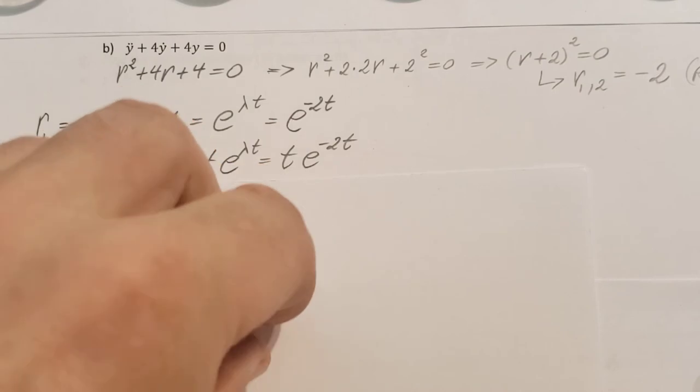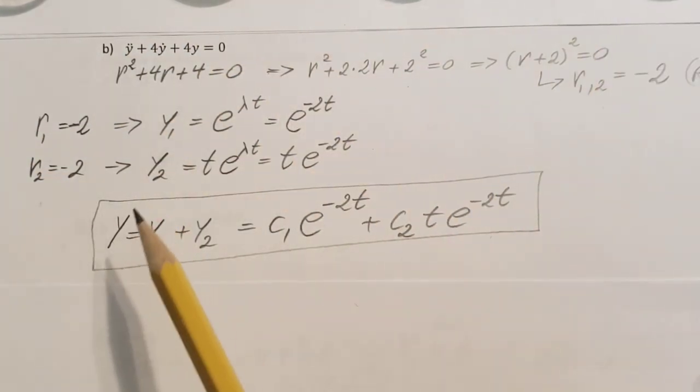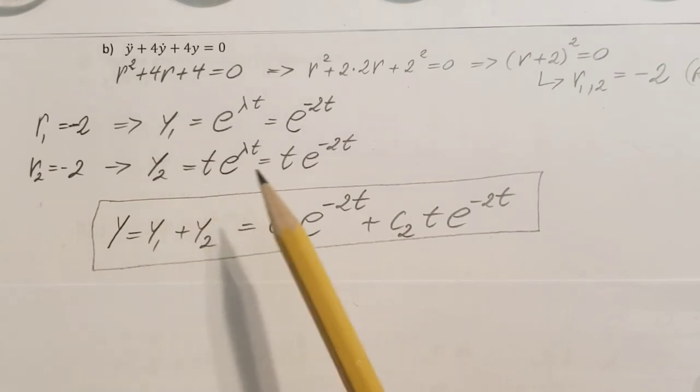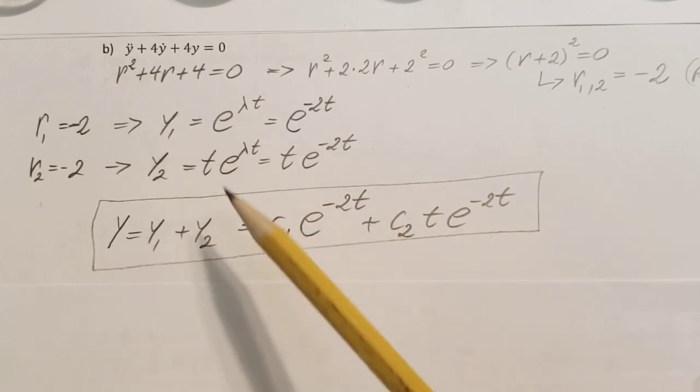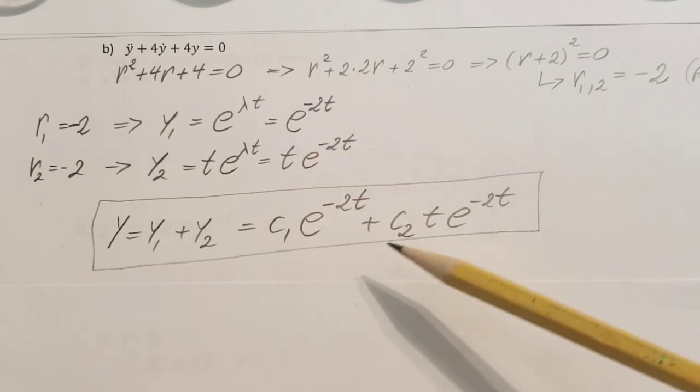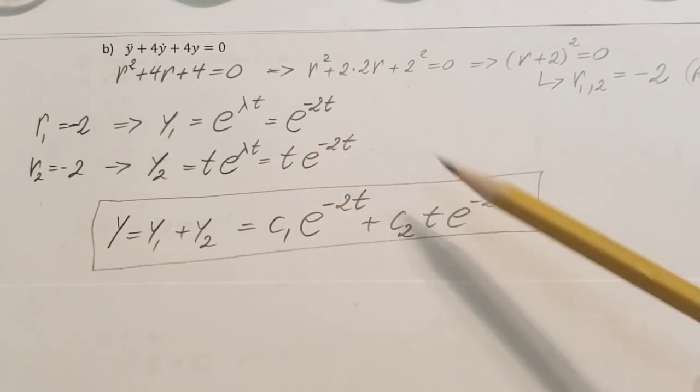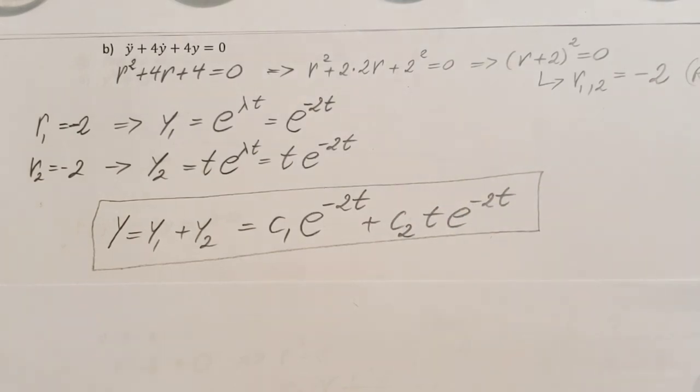So to finish it up, our solution is y equals y1 plus y2. Plug it in, and just make sure you don't forget that we need to add a constant in front of it. So c1 times y1 and plus c2 times y2. And there it is, pretty short.